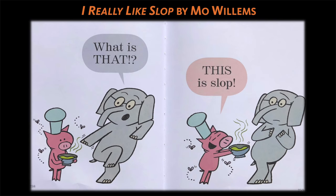In this example from Mo Willems' terrific Elephant and Piggy series, Gerald the Elephant points to a bowl that Piggy carries and asks, "What is that?" Piggy holds up the bowl and replies, "This is slop." Simple, right?